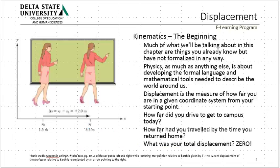If I were at a board talking to you, I'd be moving back and forth around the board. Kinematics is all about describing that motion back and forth. Where am I? When am I there? What is my total displacement? My total displacement is the distance between where I started and where I ended up. Most of the time when I give a talk in class, at the end of the class, my total displacement is zero.